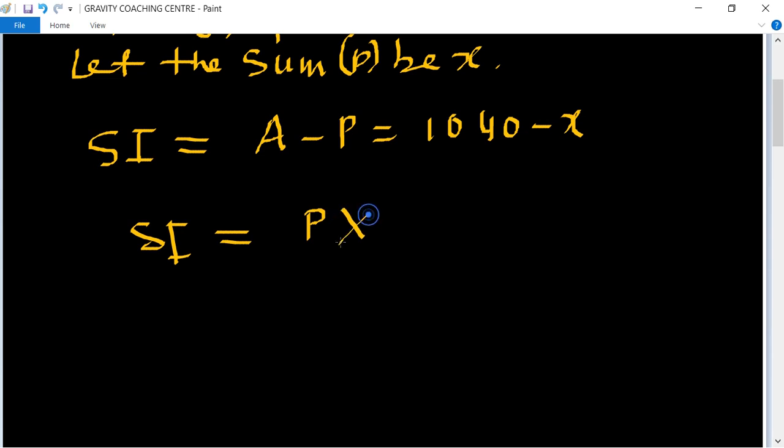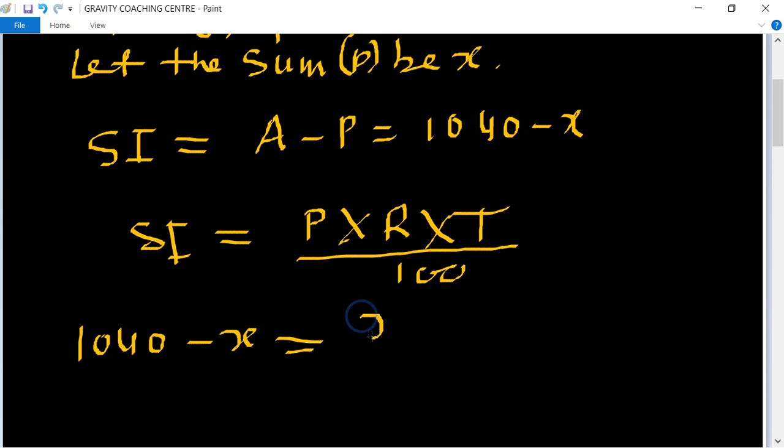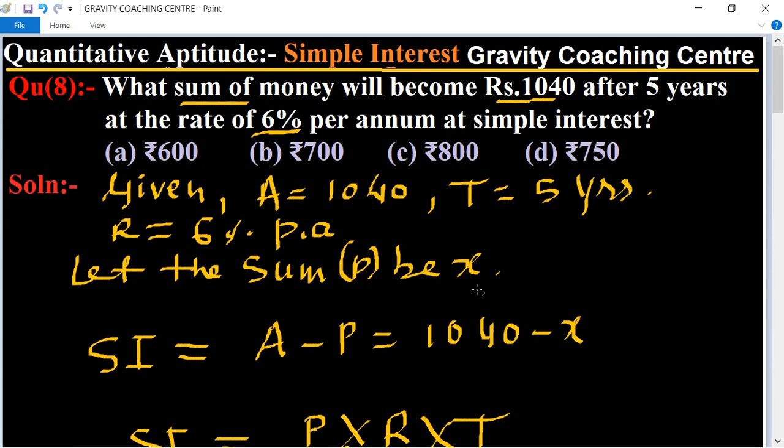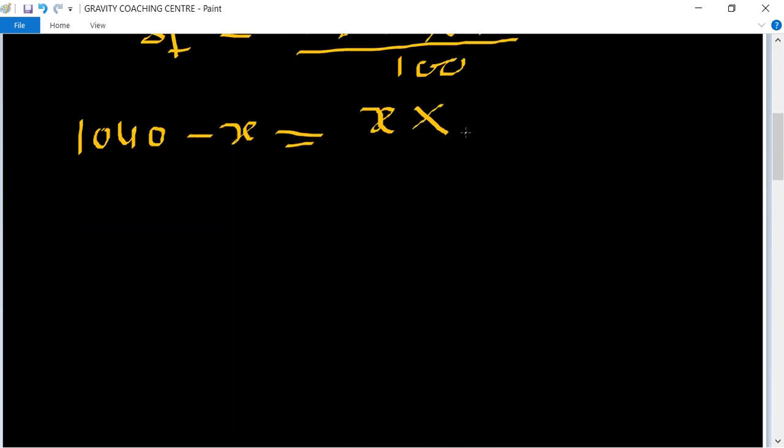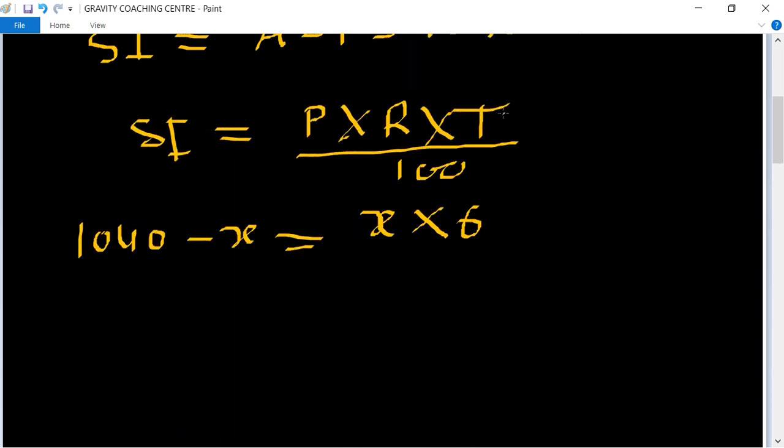P into R into T upon 100. And simple interest is 1040 minus x, and the value of P equal to x, and rate of interest is 6%, and time equal to 5 years, upon 100.